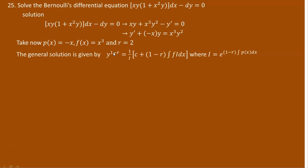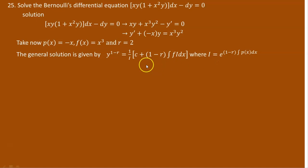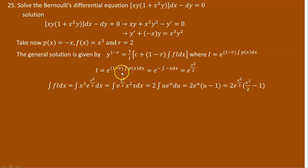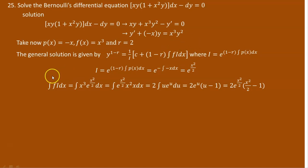Applying the formula, I equals e to the power of (1 minus r) times the integral of p(x) dx. With r equal to 2, this is e to the power of negative 1 times the integral of negative x dx. Since p(x) equals negative x, the negatives give e to the power of the integral of x dx, which equals e to the power of x squared over 2. For the integral of f·I: f is x cubed and I is e to the power of x squared over 2, so we integrate x cubed times e to the power of x squared over 2 dx.